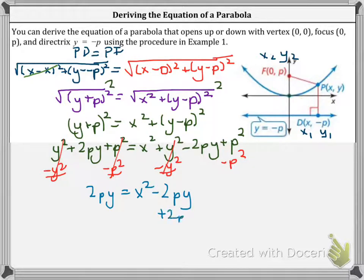So now we have 2PY equals X squared minus 2PY. So let's add 2PY to both sides. Now I have 4PY equals X squared. I'm going to isolate my Y, so let's divide by 4P.